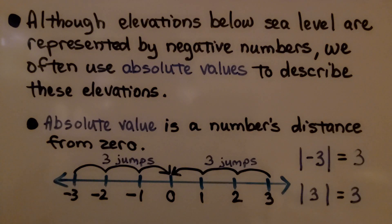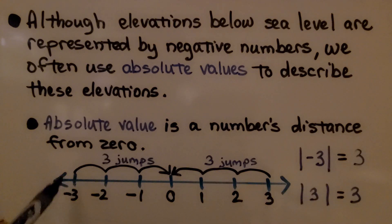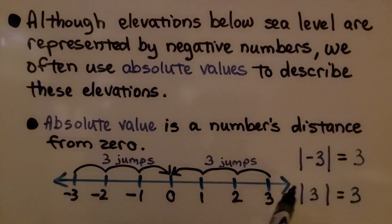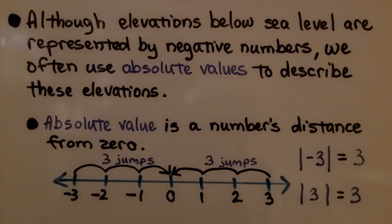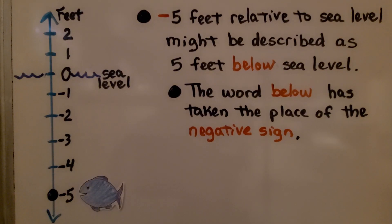Remember, an absolute value is a number's distance from zero. The absolute value of negative three is three because it's three jumps from zero, and the absolute value of positive three is also three. Negative five feet relative to sea level might be described as five feet below sea level — the word 'below' has taken the place of the negative sign.